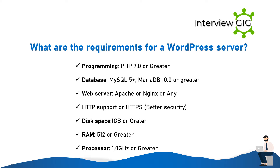What are the requirements for a WordPress server? Programming: PHP 7.0 or greater. Database: MySQL 5 Plus or MariaDB 10.0 or greater. Web Server: Apache or Nginx, or any HTTP/HTTPS support. Disk Space: 1 Gigabyte or greater. RAM: 512 MB or greater. Processor: 1.0 GHz or greater.